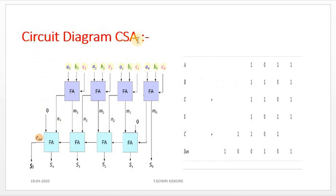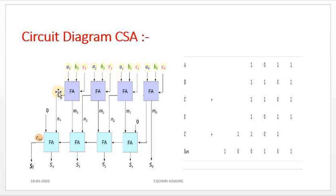This is the circuit diagram of the carry-save-adder — a 4-bit carry-save-adder with inputs A, B, and C. The inputs applied are A0, A1, A2, A3, B0, B1, B2, B3, and C0, C1, C2, C3. These inputs are applied to the upper portion of the full-adders: A0, B0, C0 to the first; A1, B1, C1 to the second; A2, B2, C2 to the third; and A3, B3, C3 to the fourth. From these full-adders we get sum and carry, which are fed to the lower portion of the full-adder.